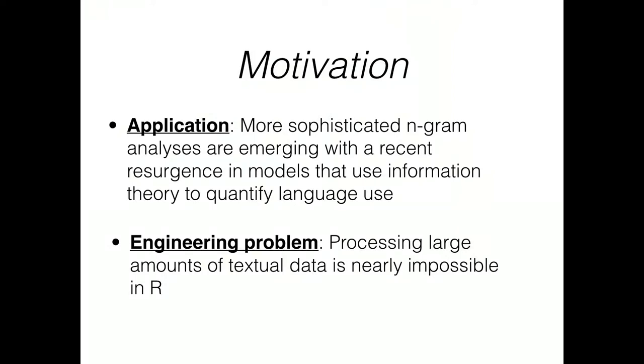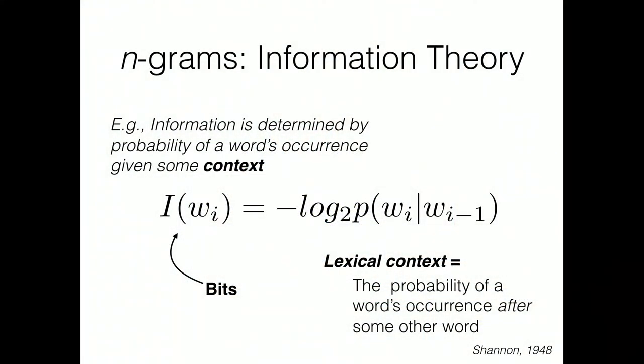There's an engineering component: processing large amounts of text data is nearly impossible. Because I learned R as one of my first languages and Python came later, I ran into a huge efficiency issue when trying to crunch data. Briefly, information theory is the negative log-two probability of a word given some other word — the conditional self-information of word wi. You can compute this across all words and pull out the information value associated with a word, which could also be understood as complexity.